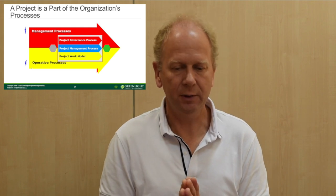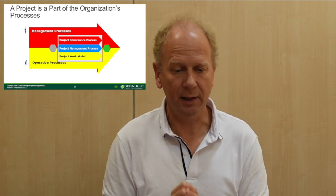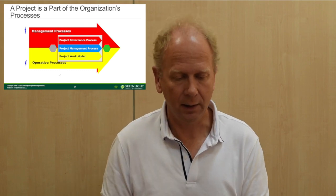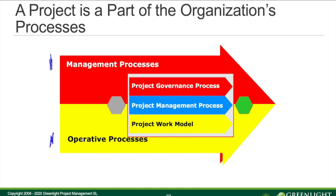As we discussed earlier, we needed to decide whether we should do something as a project or not as a project. If we decide not to run something as a project, then we only have the red and the yellow processes. But if we decide that we should do something as a project, then we also introduce the blue part in the middle — using our product management model like GPMM to execute the work in the company.